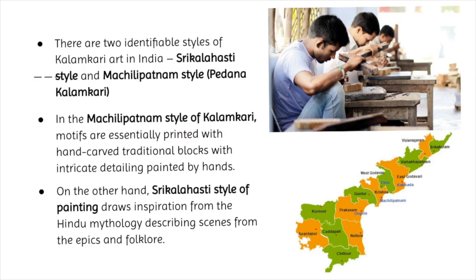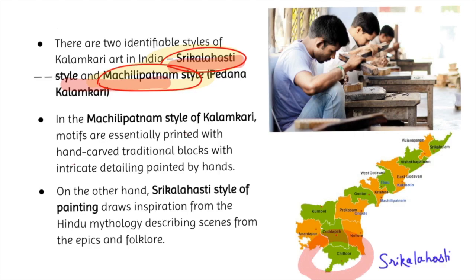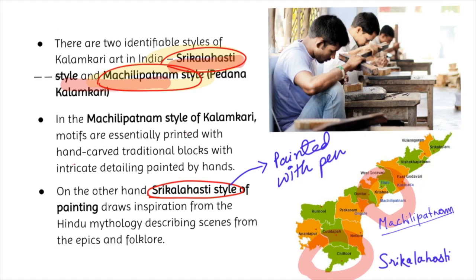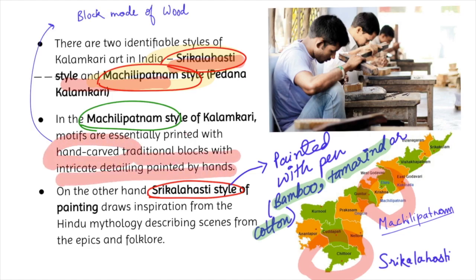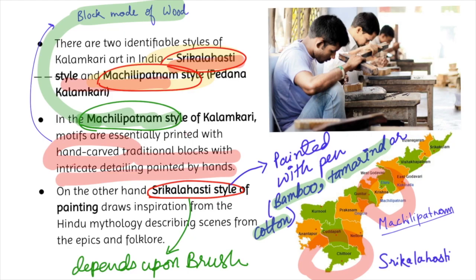Srikalahasti is a city in the Chittoor district of Andhra Pradesh, while Machlipatnam is in the Krishna district of Andhra Pradesh. The prime difference between the two techniques: in Srikalahasti, the textiles are literally painted with a pen made from bamboo, tamarind, or cotton. In Machlipatnam style, they first handcraft a block and then use that block to print on the cloth — i.e., block printing technique.